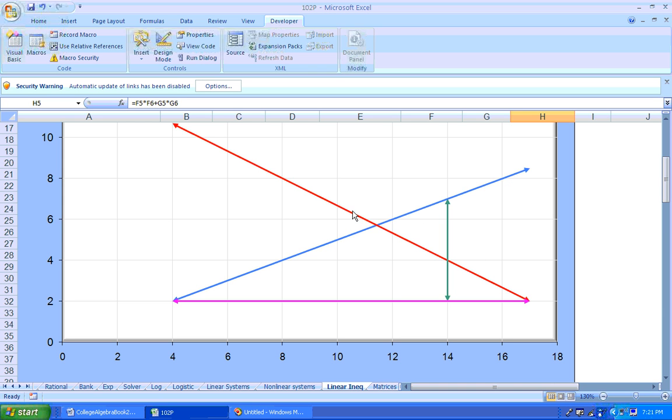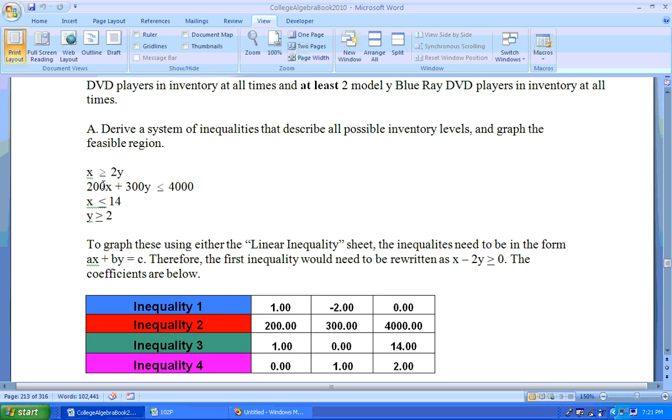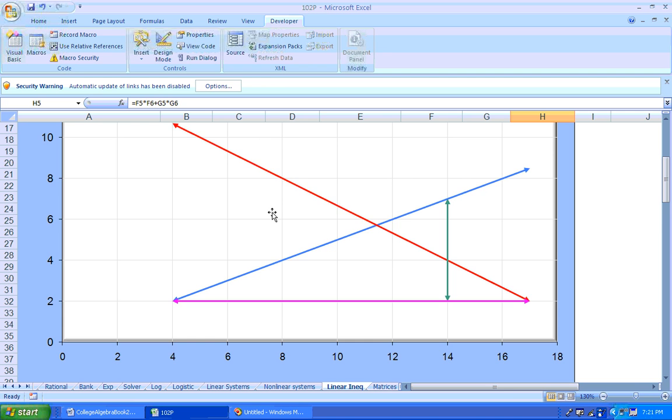How about this red line here? Are we below the red line? Well, let's see what the inequality is. The inequality is this one, 200x plus 300y is less than or equal to 4,000. And if we try a point like 0, 0 in here, which does not lie on that line, it's actually below this line. It's to the left, below this line.